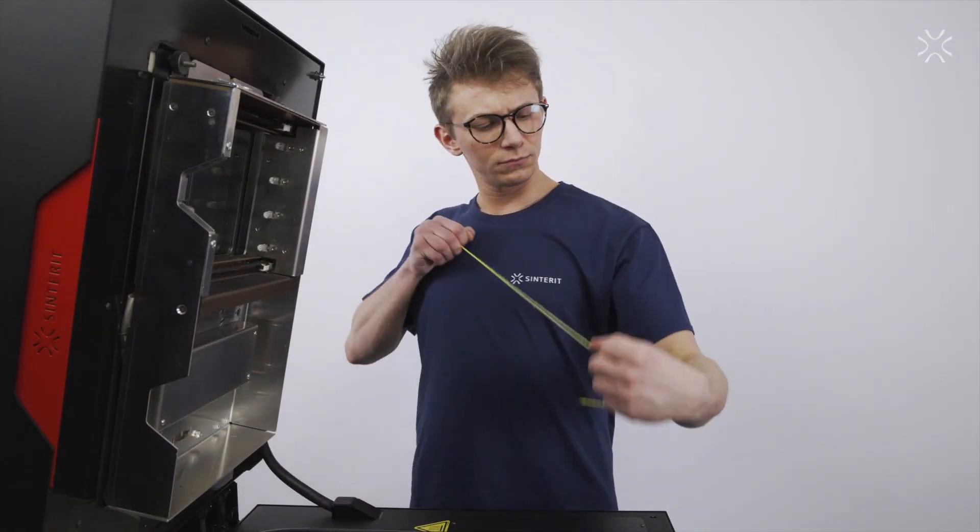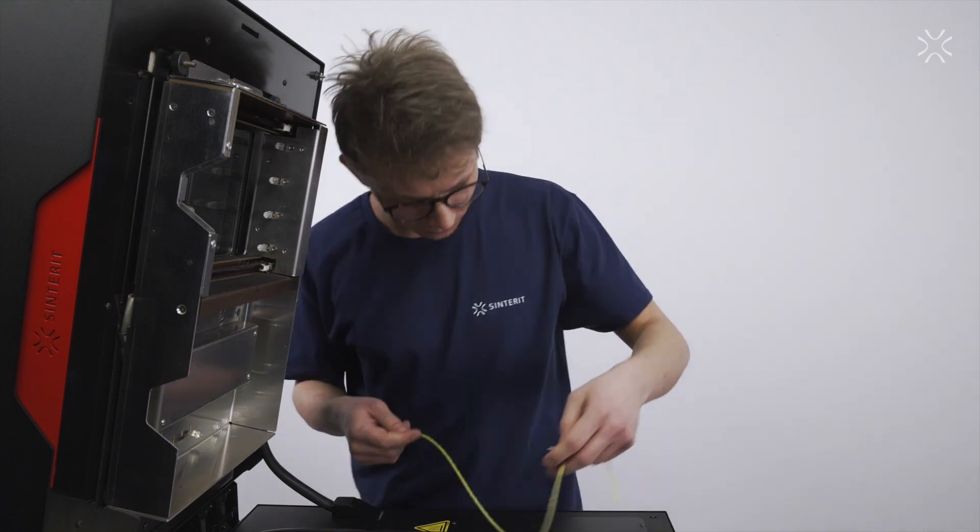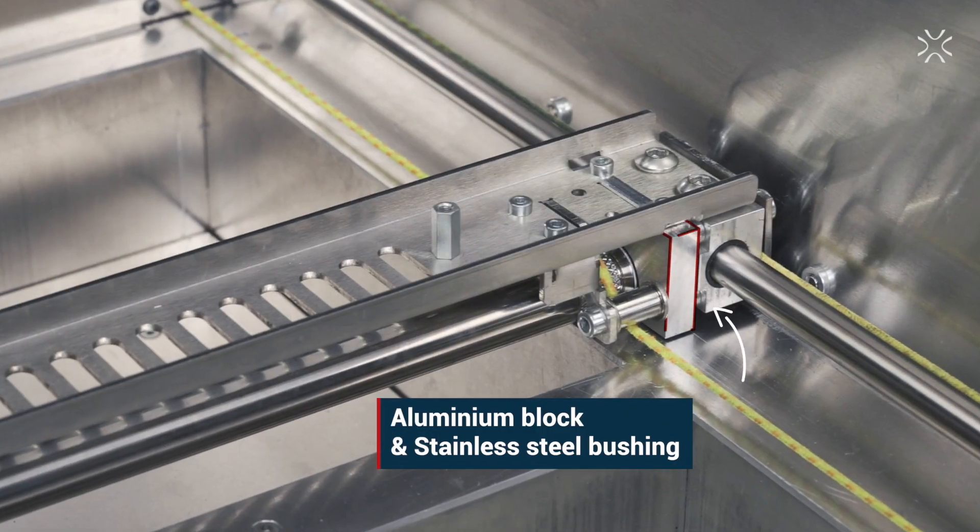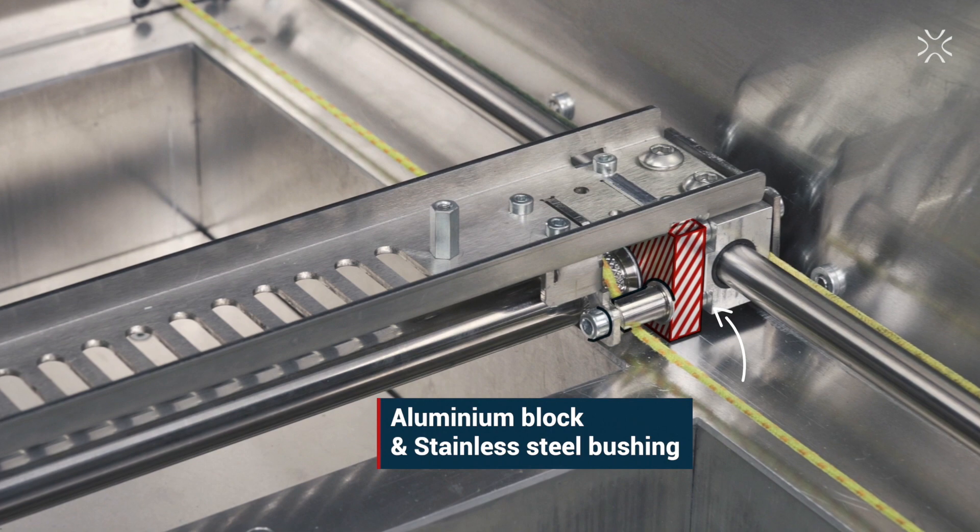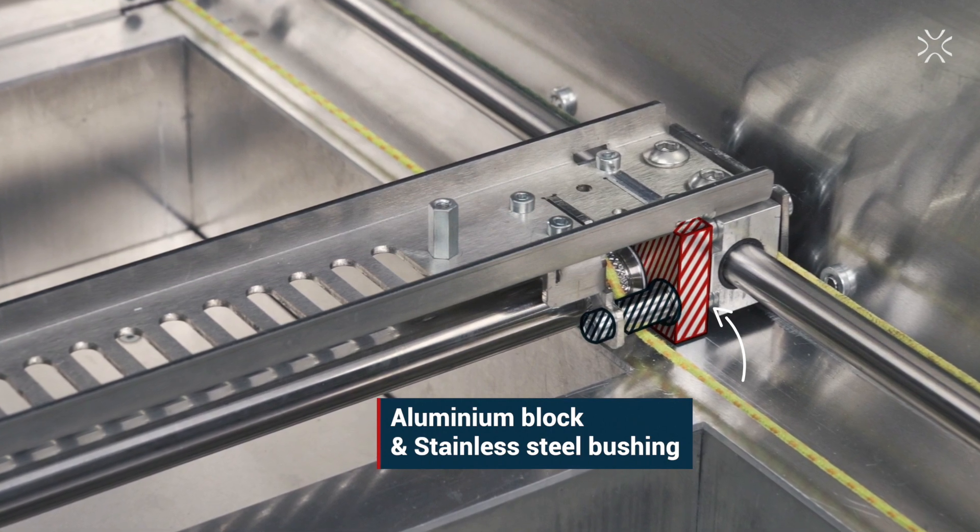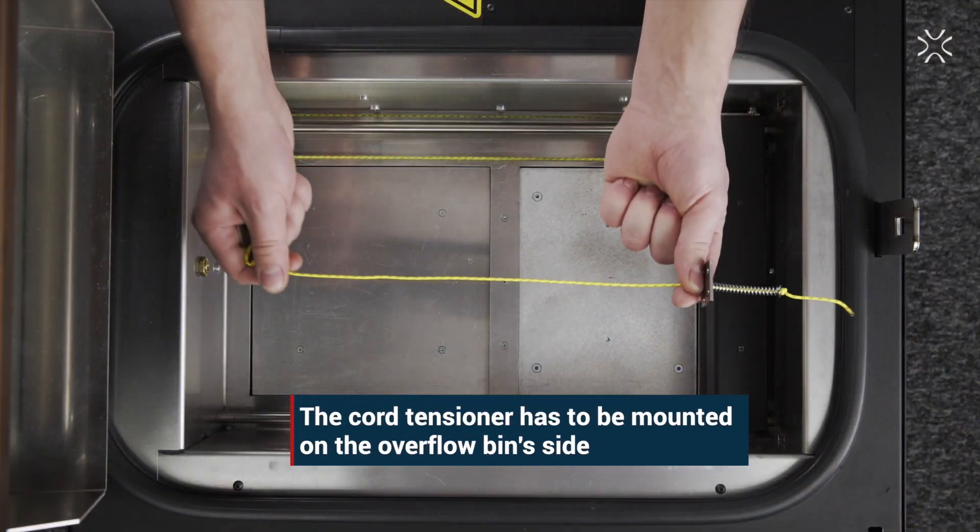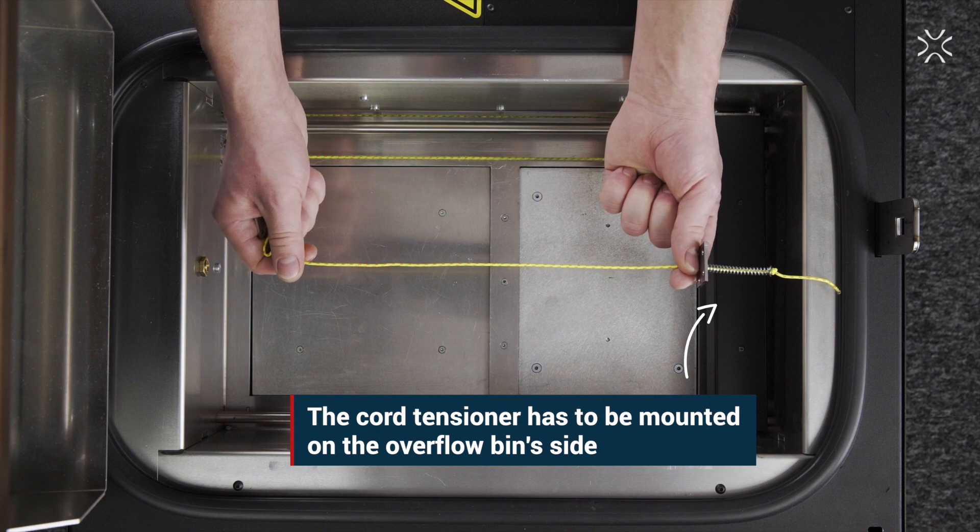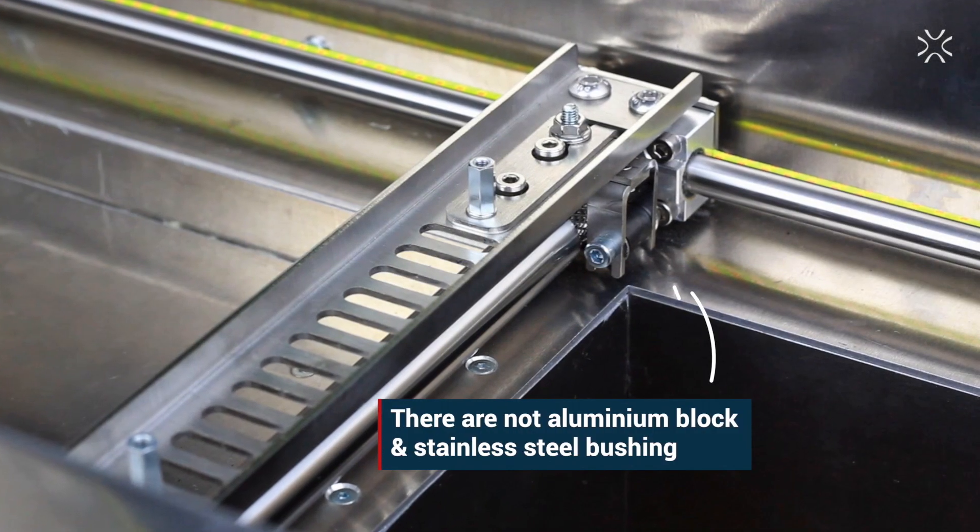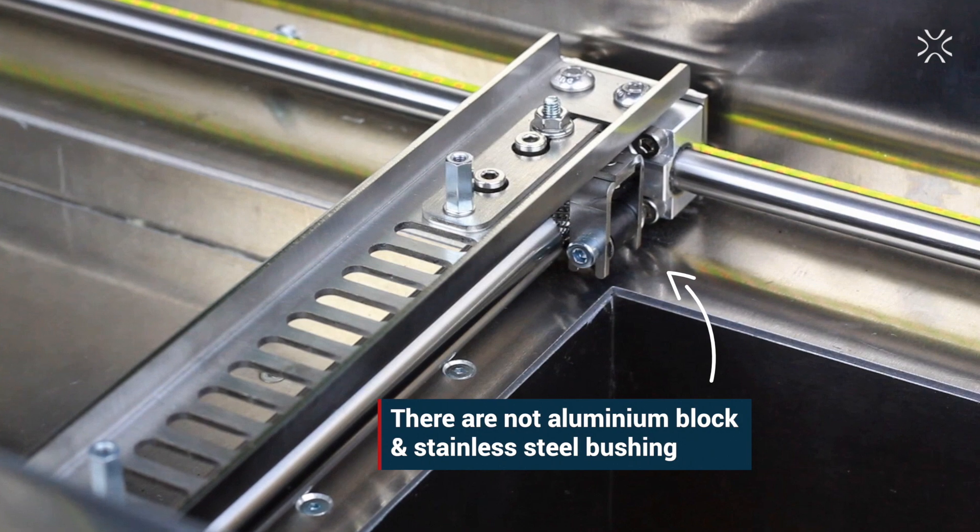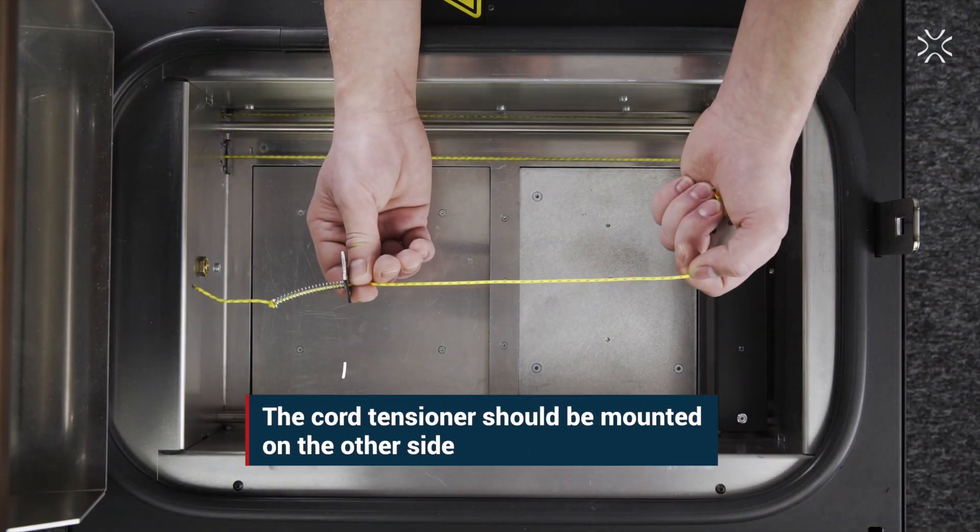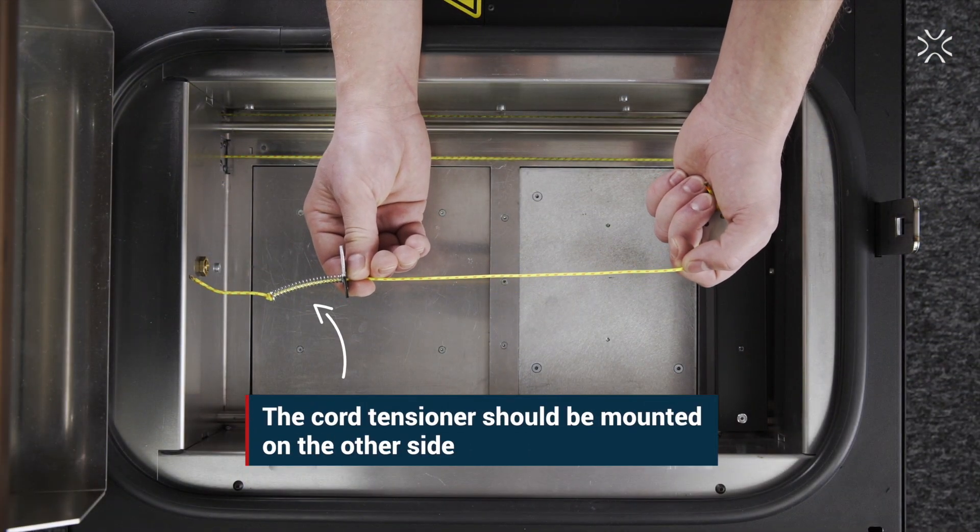Take your new Recoater Cord and stretch it in your hands before mounting. If the Recoater arm in the printer has two aluminum blocks on both sides and stainless steel bushings, it means that the cord tensioner has been mounted on the overflow bin side. Otherwise, if the Recoater does not have these features, the cord tensioner should be mounted on the other side.